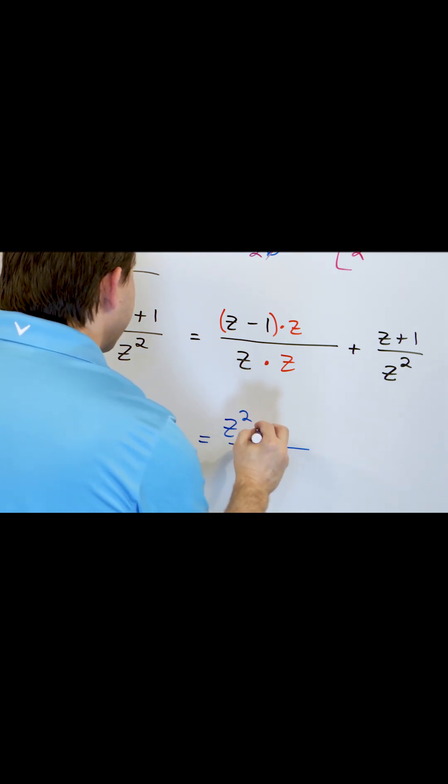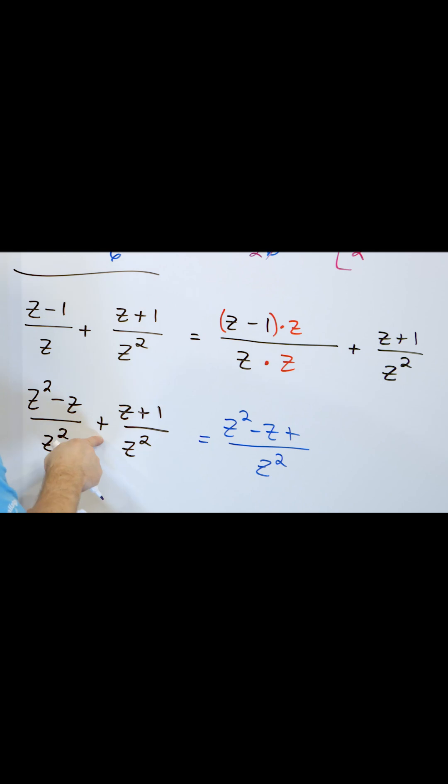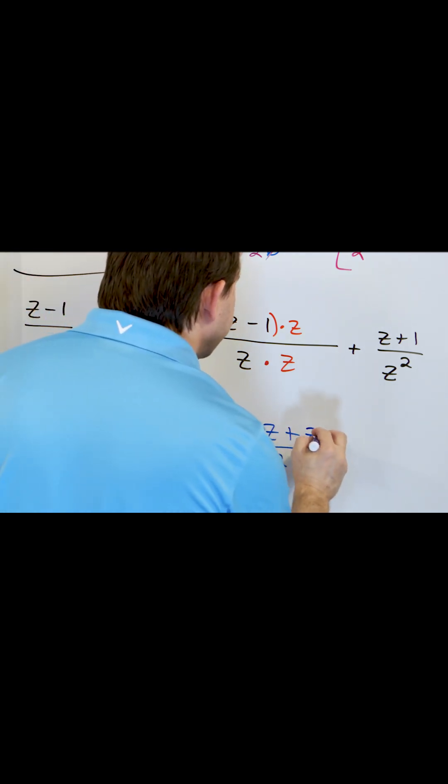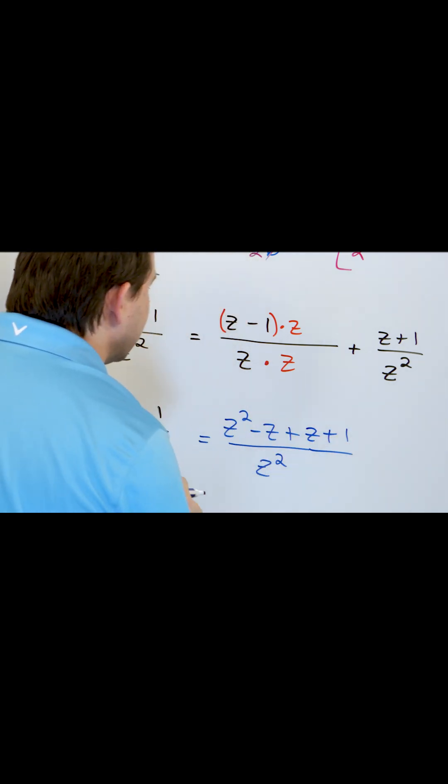So I have z squared minus z plus, because of the plus sign, z plus one, z plus one, and I'll extend my fraction bar.